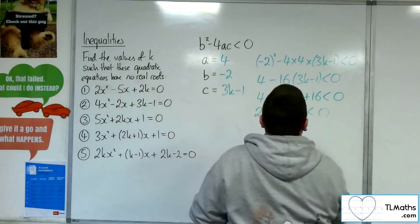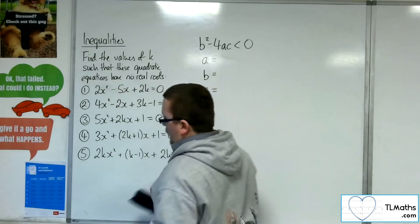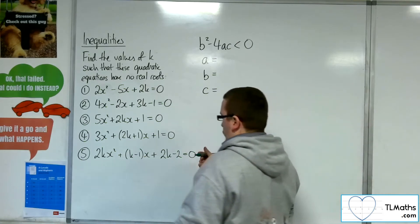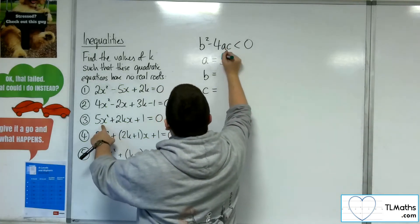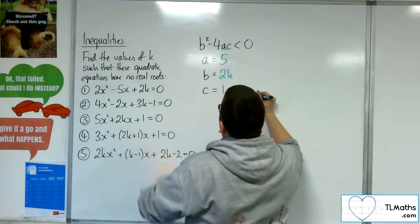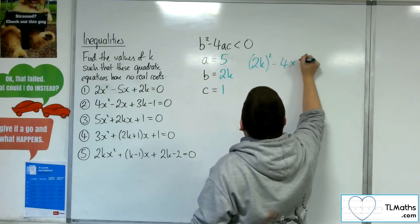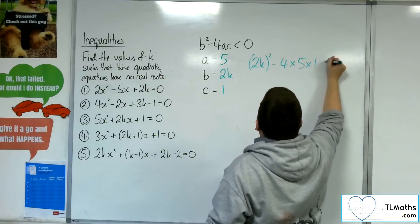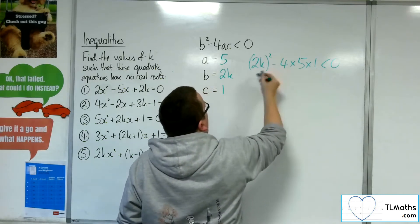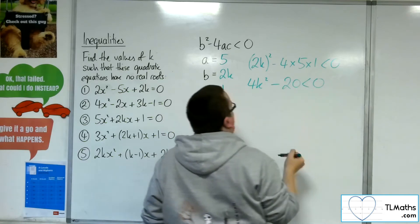Let's have a look at number 3: 5x squared plus 2kx plus 1 equals 0. So A will be 5, B will be 2k, and C will be 1. We want B squared take away 4 lots of A times C, and that's got to be negative. So 2k all squared will be 4k squared, take away 20, and it's got to be less than 0.